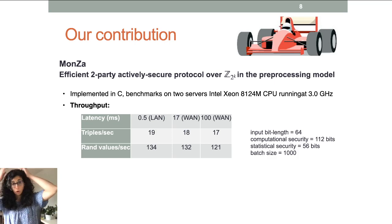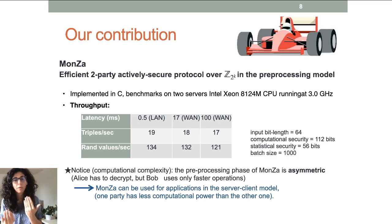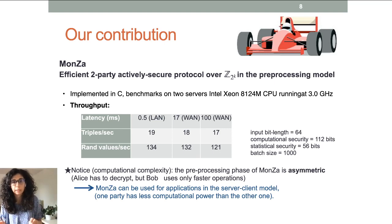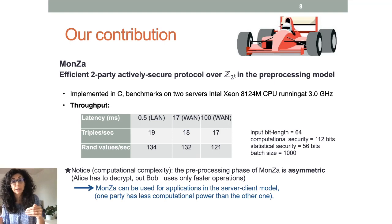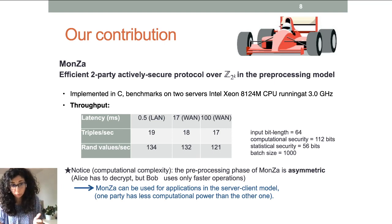Computation-wise, the roles of the two parties are not symmetric — one party always performs more or more complex operations. This means Monza can be a good choice in the server-client model, where the server has more computational power than the client. These are some features, and now I want to start constructing the protocol.